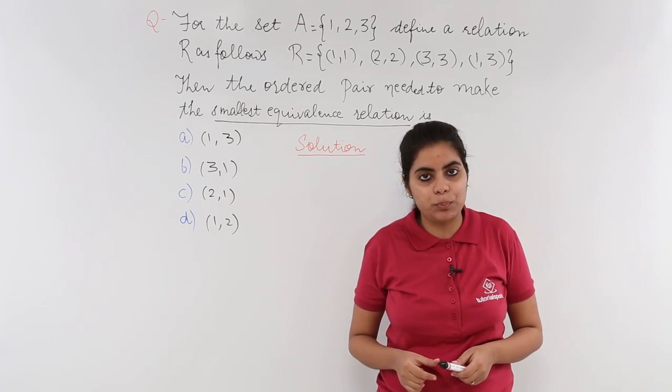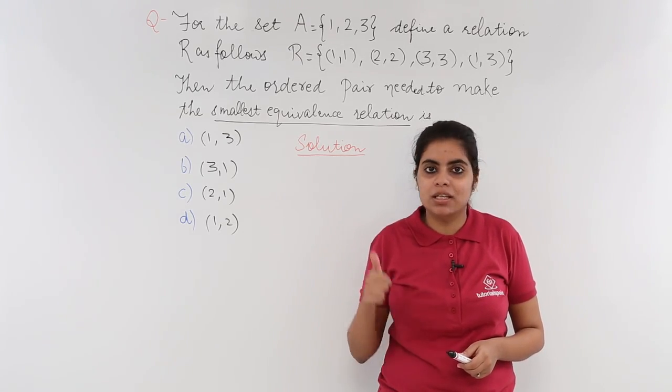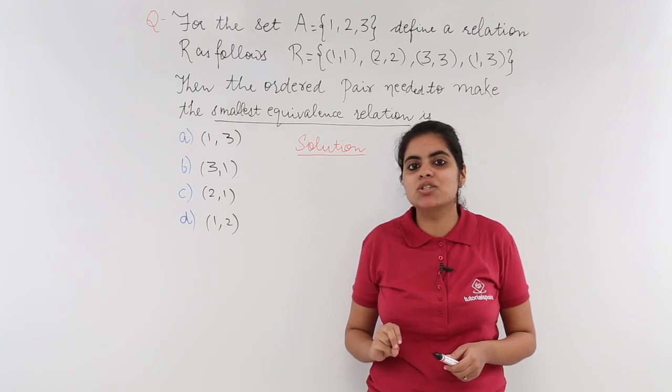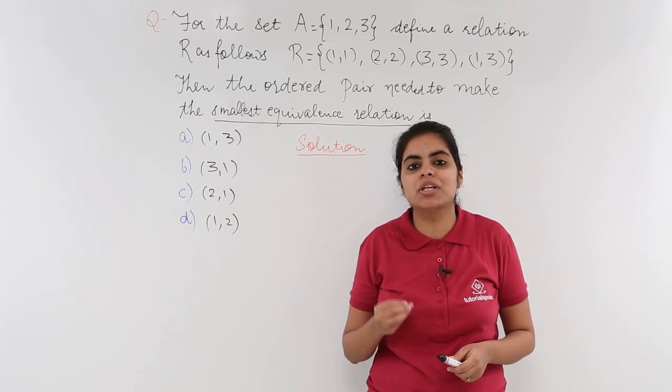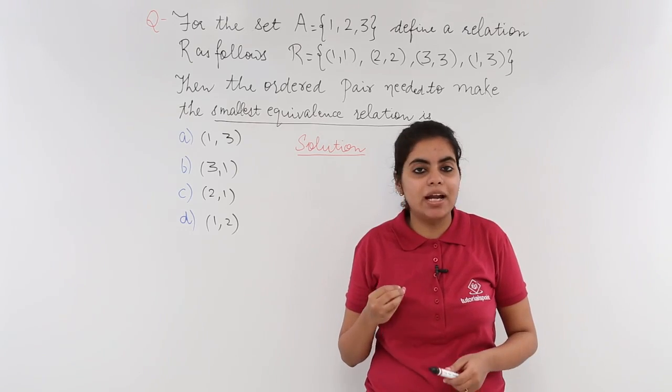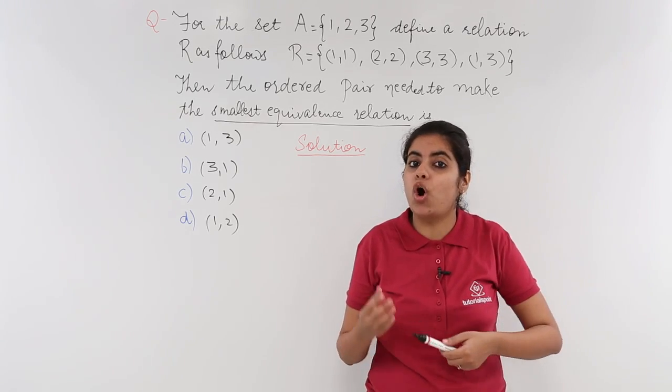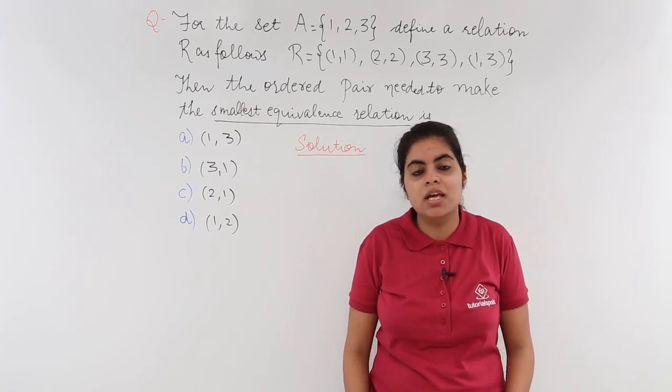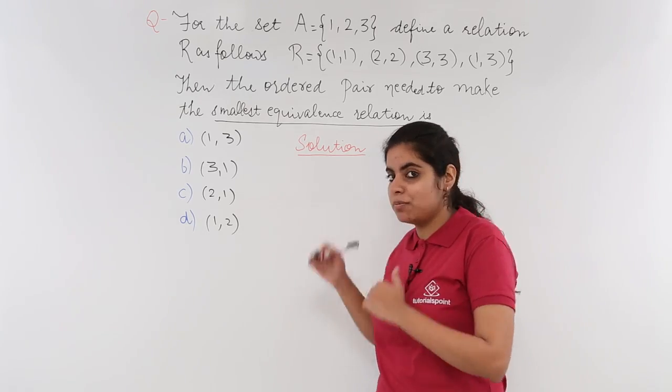I'll explain in short what an equivalence relation actually is. An equivalence relation is the one which is always symmetric, reflexive and transitive. If at all it is not symmetric or not reflexive or not transitive, it is not an equivalence relation. Now, let's get to the question back.